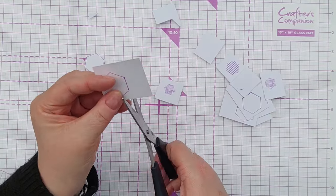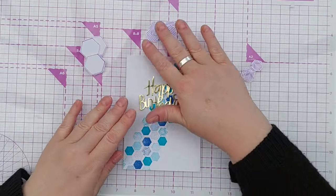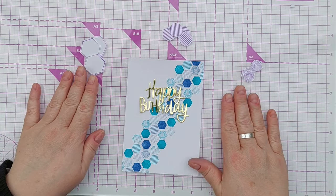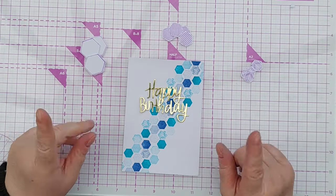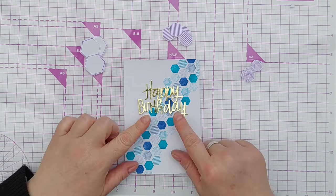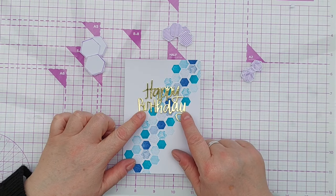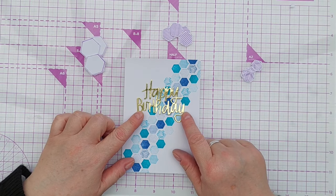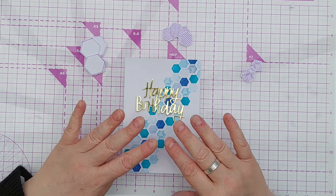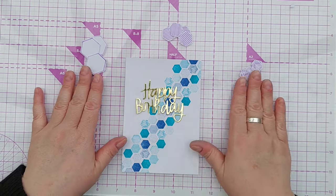Right I'm going to cut all these out and then I'll come back to you. So now I've got my card panel and four lots of each of the three stamped hexagons and for my sentiment I'm going to use this gold foiled happy birthday die cut because I think the gold goes nicely with the blue and the purple.